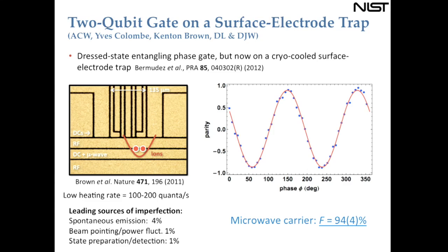One challenge with surface traps is that increasing laser power risks charging dielectric particles on the surface, which shifts the trapping frequency and pushes Raman sideband cooling off resonance. We also have significant intensity noise from laser beam pointing. I'll talk on Friday about methods we're using to address these issues. This is preliminary data and we'll likely revisit the experiment to push the fidelity further.